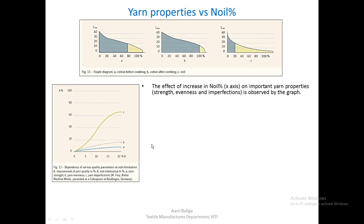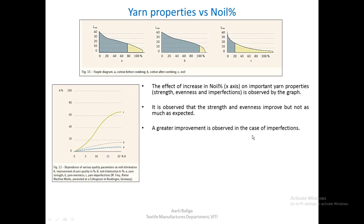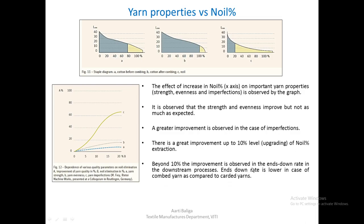The following observations come from this graph, which was part of work presented by Mr. Frey of Rieter Machine Works in Germany. It is observed that strength and evenness improve, but not as much as expected. A greater improvement is observed in the case of imperfections — there is a drastic improvement up to the 10 percent level of noil extraction. After 10 percent, the improvement slightly reduces. Beyond 10 percent, improvement is observed in the ends-down rate in the downstream processes.